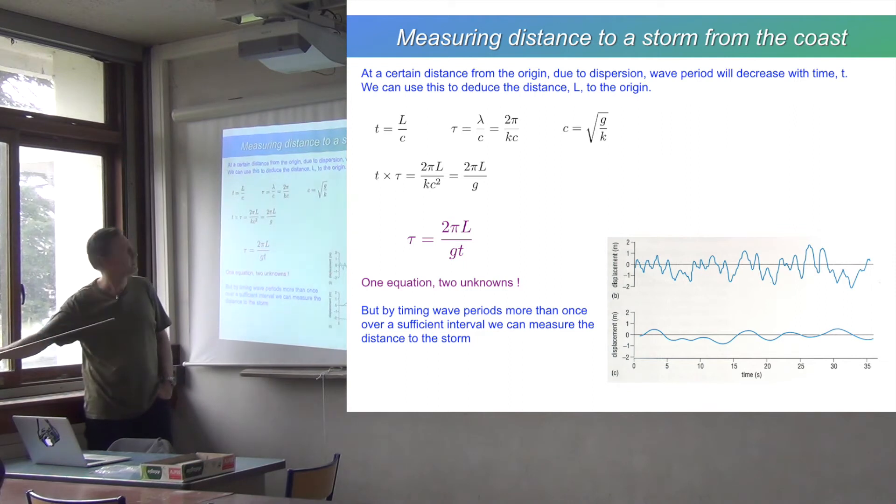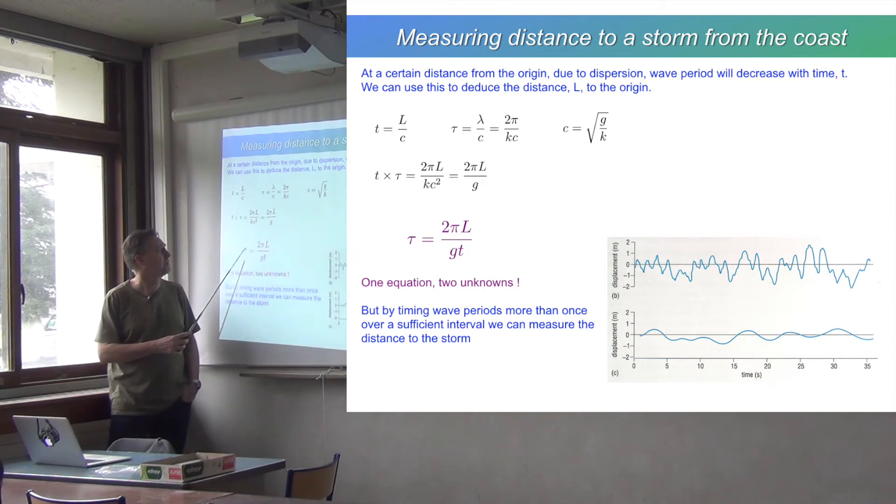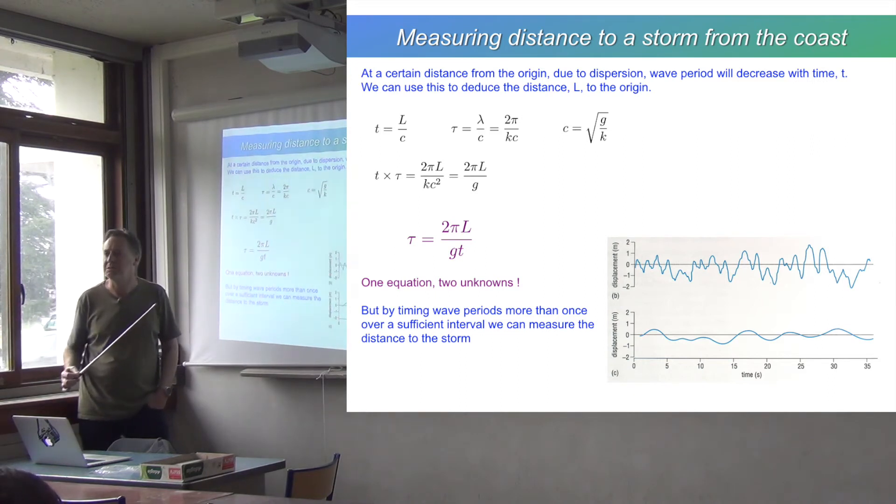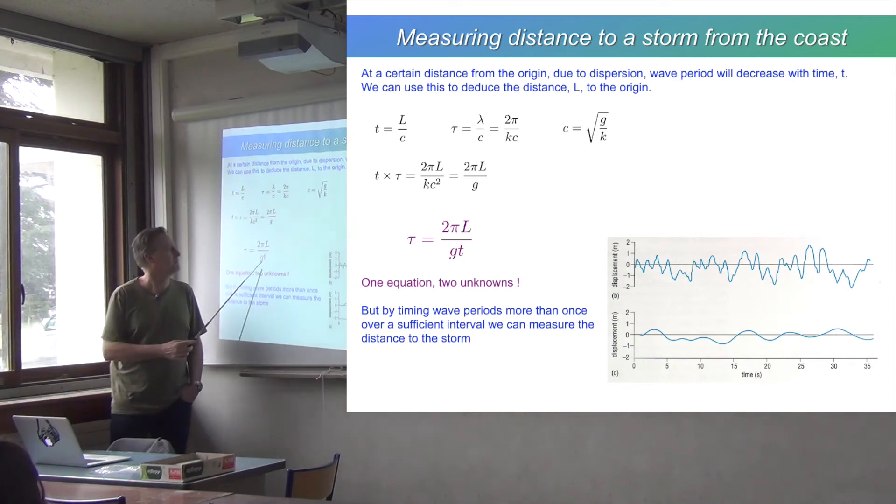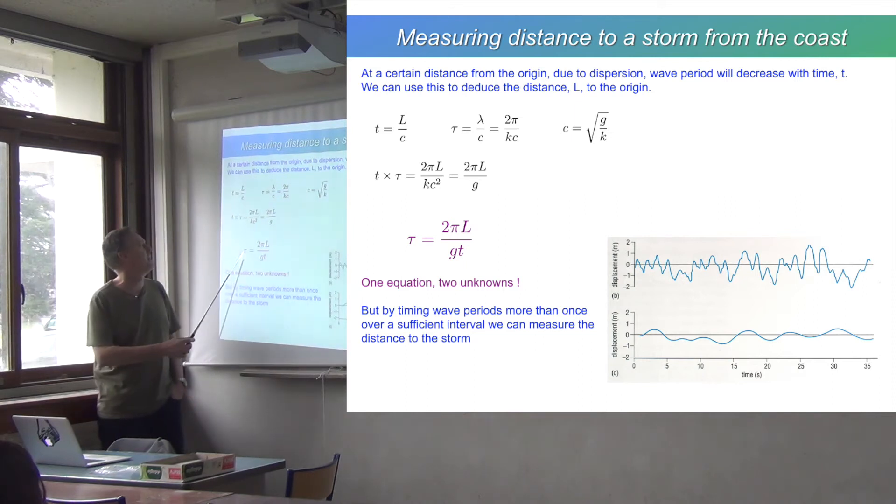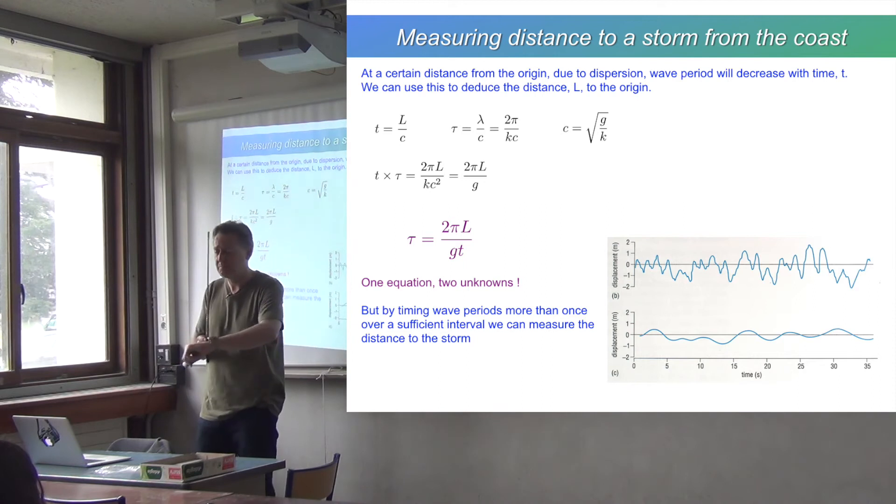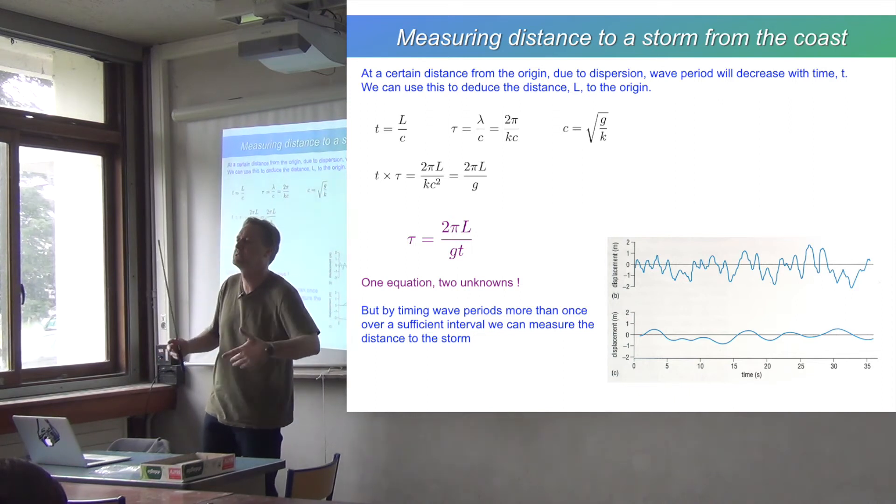And we can rearrange that to get an expression for the period of the waves, which is τ equals 2πL over G times T. Now, that doesn't appear to be very helpful, does it? Because you don't know L and you don't know T. So you could stand there with your watch at the beach and time the period of the waves. You see a wave come in, you press the stopwatch, wait till the next one comes in, or maybe do 10 just to get some precision.